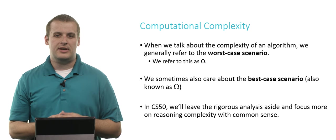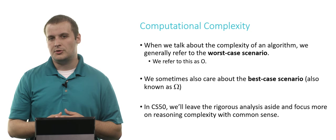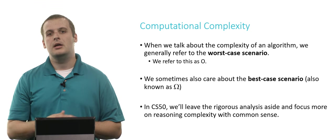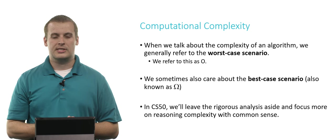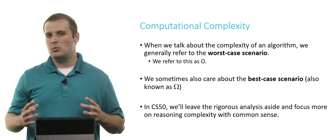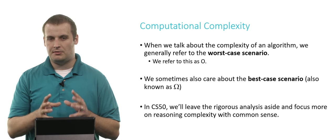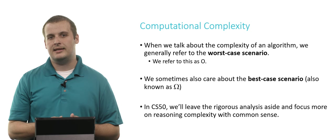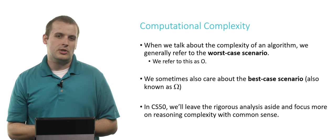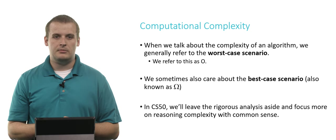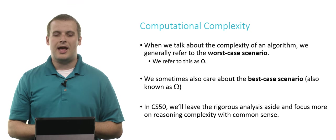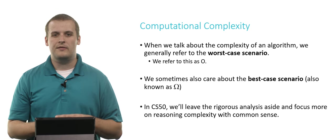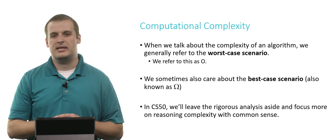When we talk about the complexity of an algorithm, which sometimes you'll hear referred to as time complexity or space complexity, but we're just going to call it complexity, we're generally talking about the worst case scenario. Given the absolute worst pile of data that we could be throwing at it, how is this algorithm going to process or deal with that data? We generally call the worst case runtime of an algorithm big O. So an algorithm might be said to run in O of n or O of n squared, and more about what those mean in a second.